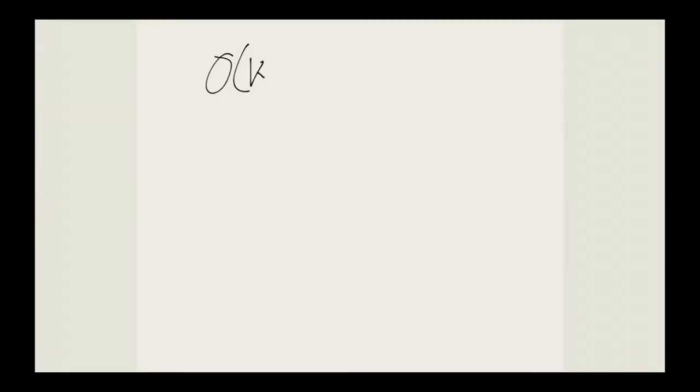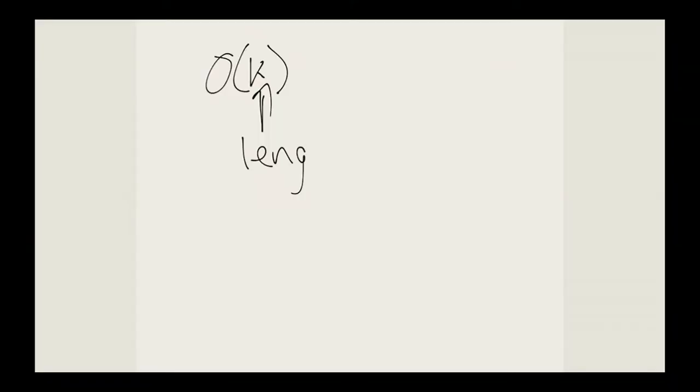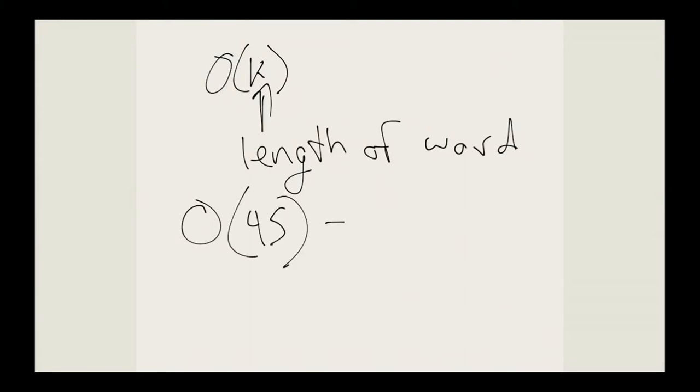That's two of the three things you'd ever need to know about tries: building them and the struct. The last thing is the runtime. The lookup in a trie is O(k), where k is the length of the word we're looking up. But for pset 5 (speller), the longest word in the dictionary is 45 characters, so this is basically O(45), which is constant time. So if there is an upper bound on your longest word, then it is constant time.